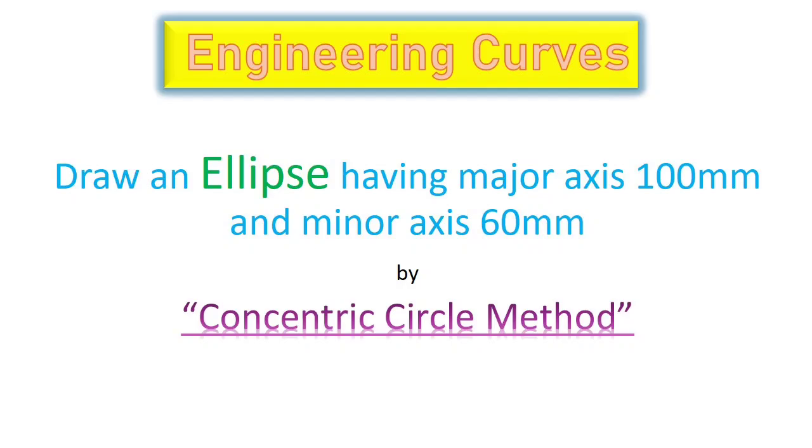Hello students, today we are going to learn how to draw an ellipse by concentric circle method. The given problem is draw an ellipse having major axis of 100 mm and minor axis of 60 mm. So let's begin step by step.